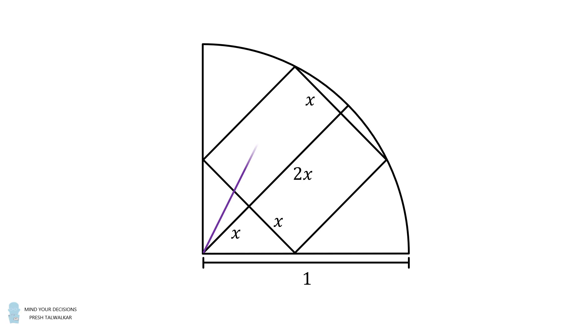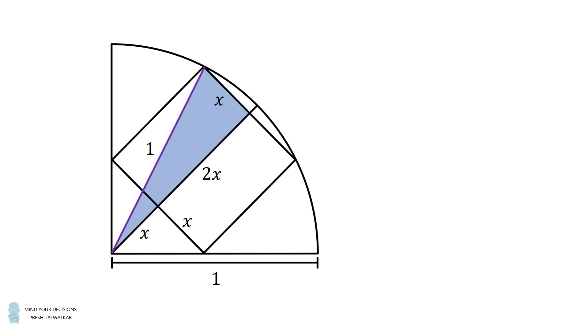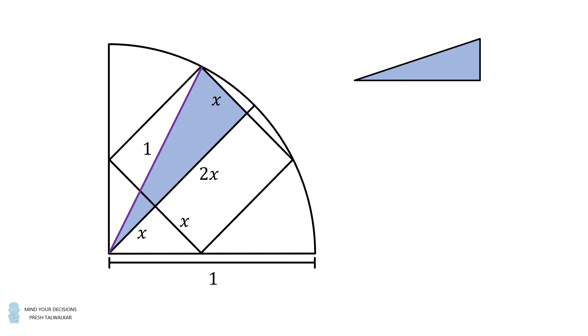Now construct this radius of the circle. Since it's a radius of the circle, its length will be equal to 1. Now consider this right triangle. Let's just focus on its dimensions. Its shorter leg is equal to x, its longer leg is equal to x plus 2x, which is equal to 3x, and its hypotenuse is equal to 1.